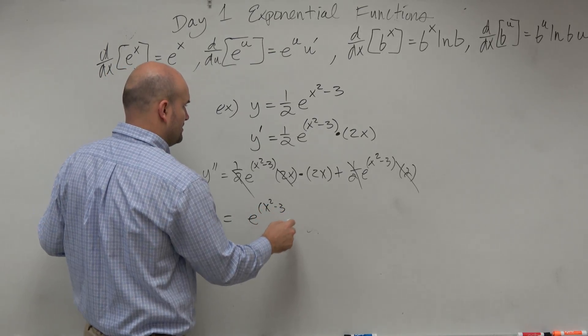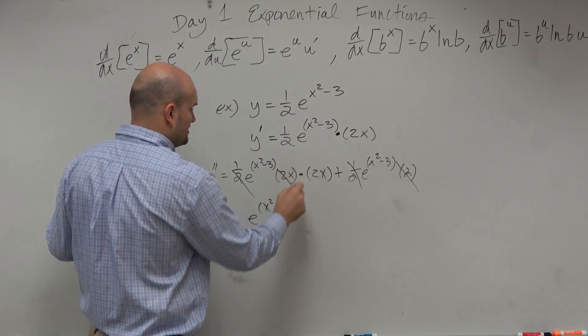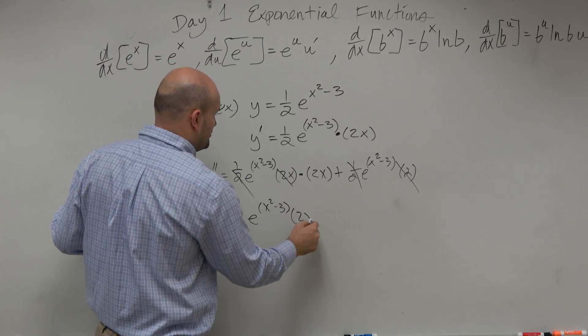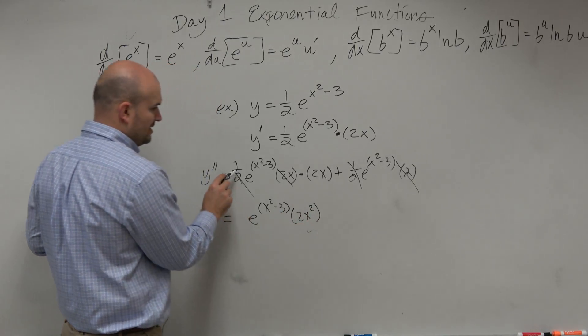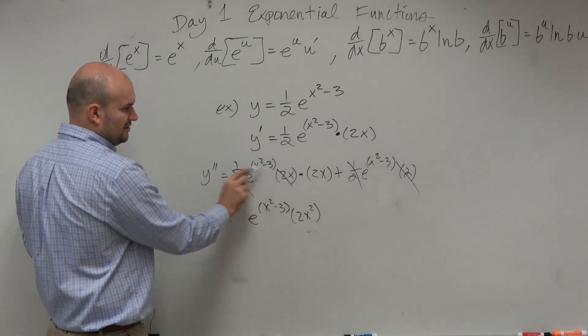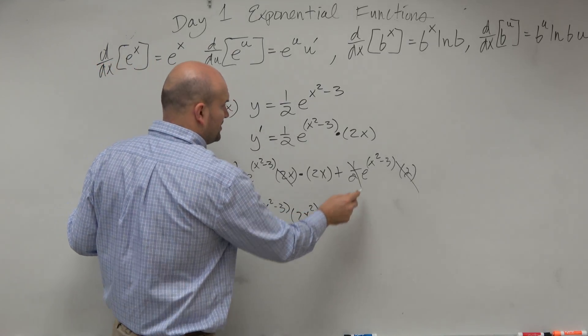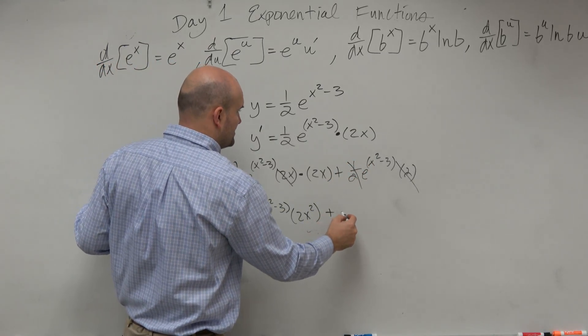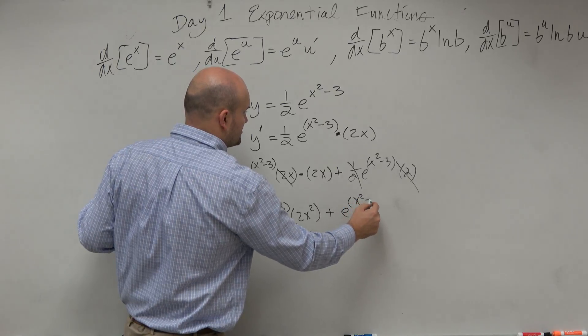x squared minus 3. We still have an x, so it's times 2x squared, right? Because all I did was divide out the 2 and those 2 would go to 1. And then plus over here, looks like I just have e to the x squared minus 3.